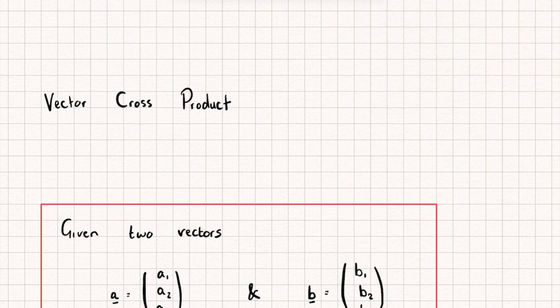Okay, so we previously looked at the dot product or the scalar product and we said that was a way of multiplying two vectors together. And when we did that, that returned a scalar.